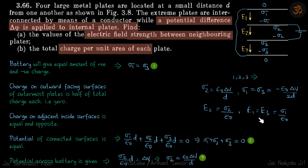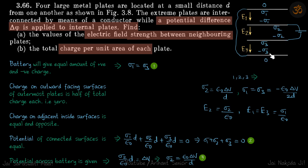These are our answers. However, the question asks for the total charge per unit area on each plate, so we need to add contributions from both surfaces. On the first plate it is sigma one, on the second plate it is sigma two minus sigma one, on the third plate it is sigma three minus sigma two, and on the fourth plate it is minus sigma three.